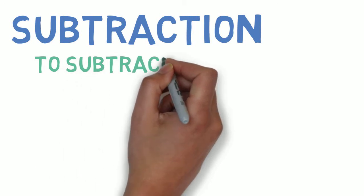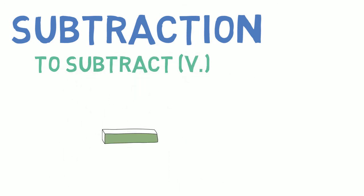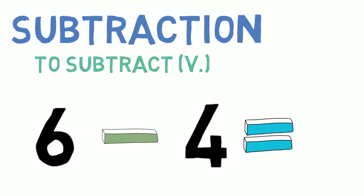Subtraction is when you subtract one number from another number. This is called a minus sign. So, for example, 6 minus 4 equals 2. Or, if I have 6 and take away 4, I get 2.